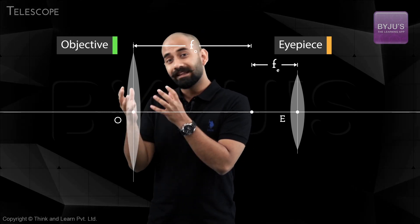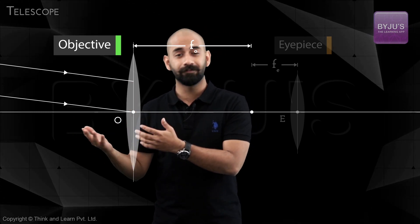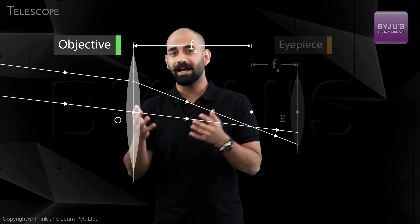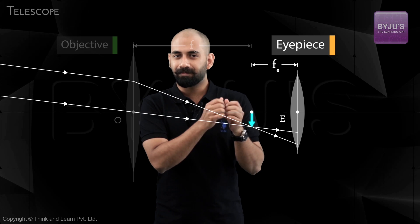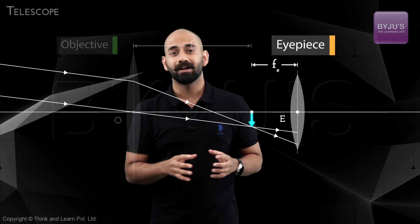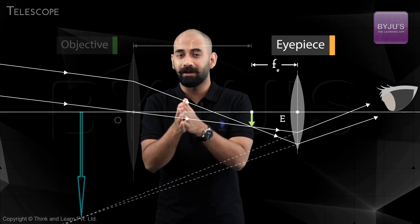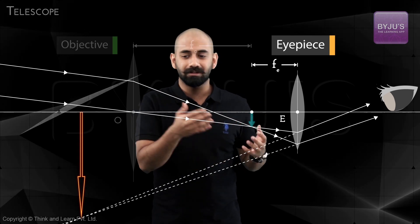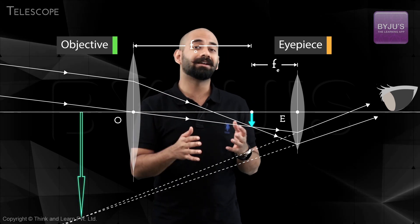The objective receives parallel rays because the object is extremely far off — almost at infinity. These parallel rays are focused by the objective, and it forms a real, inverted, and diminished image. Now the eyepiece is placed in such a way that this image is formed at the focus of the eyepiece itself. Therefore, the eyepiece forms a virtual, inverted, and magnified image of this particular image, because this image acts as an object for the eyepiece. The image is inverted because the original image was also inverted. So you finally end up having a virtual, inverted, and magnified image.